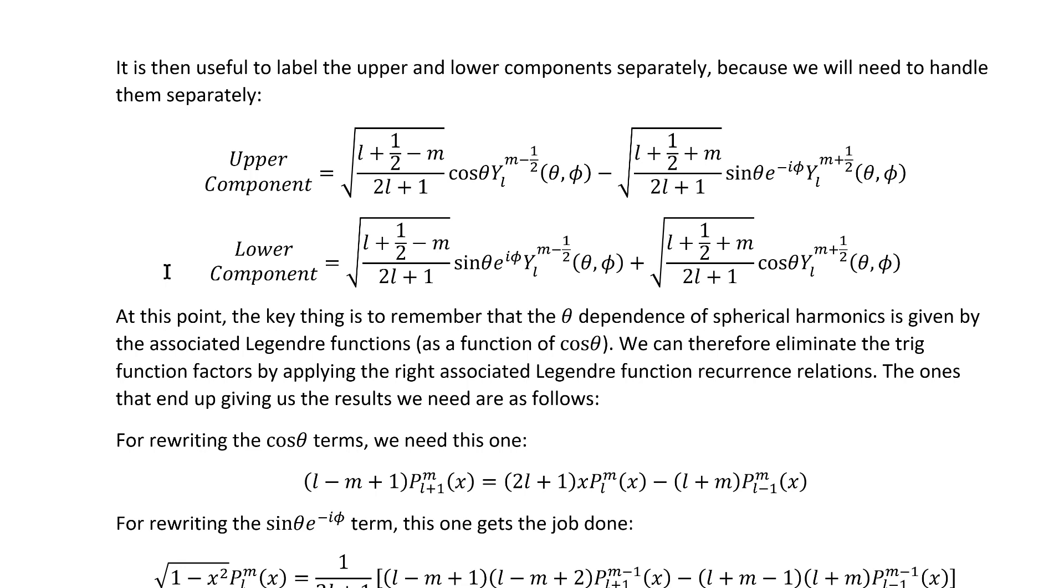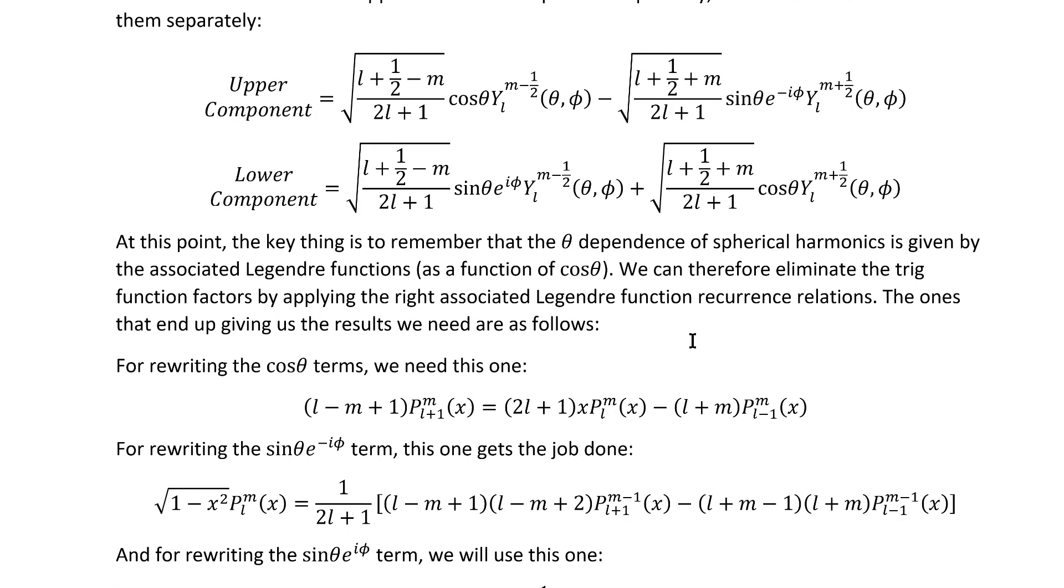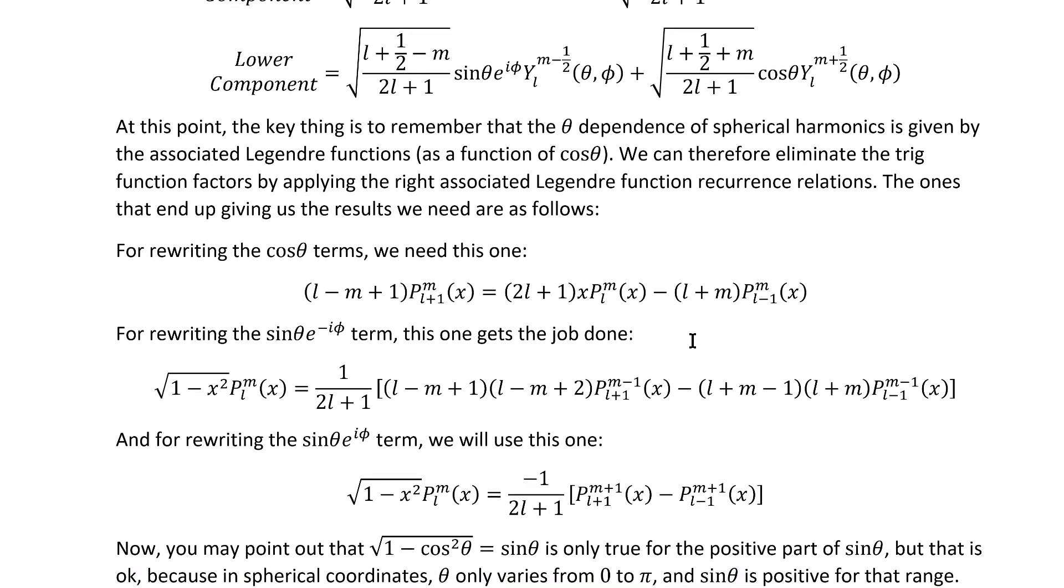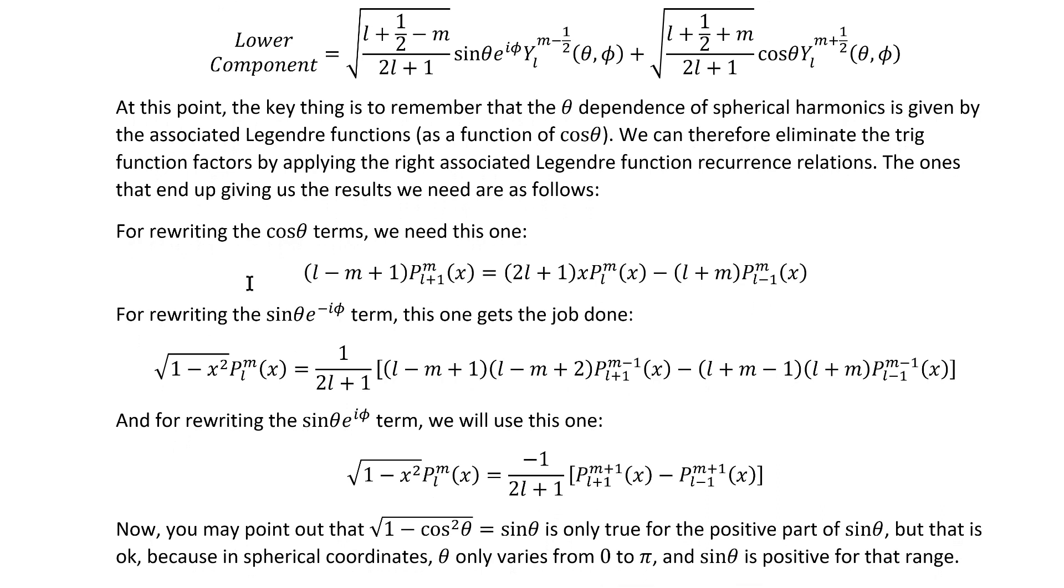Now, at this point, the key thing to remember is that the theta dependence in spherical harmonics, which we've got in there, is given by the associated Legendre functions with argument cosine theta. We can therefore eliminate the trig functions by applying the right associated Legendre function recurrence relations. The ones that end up giving us the results we need are as follows.